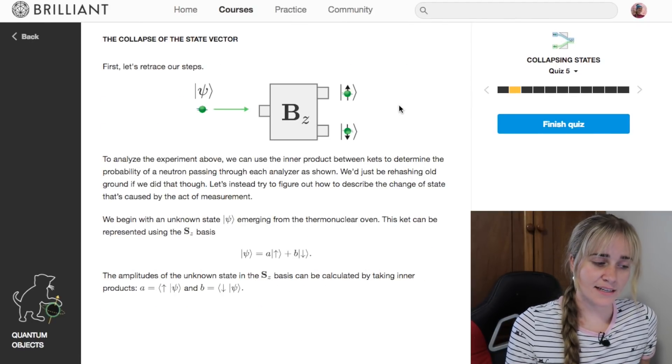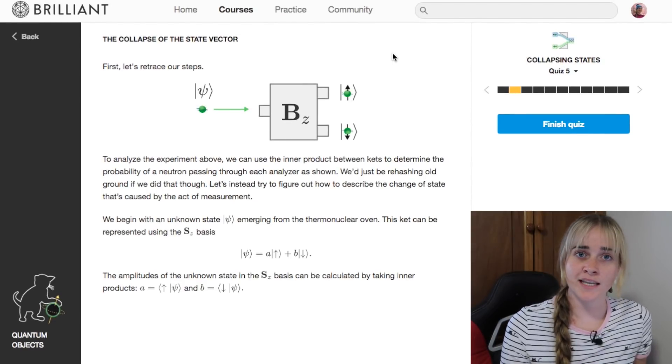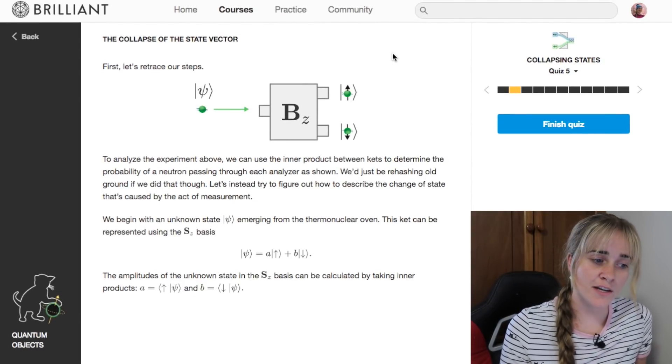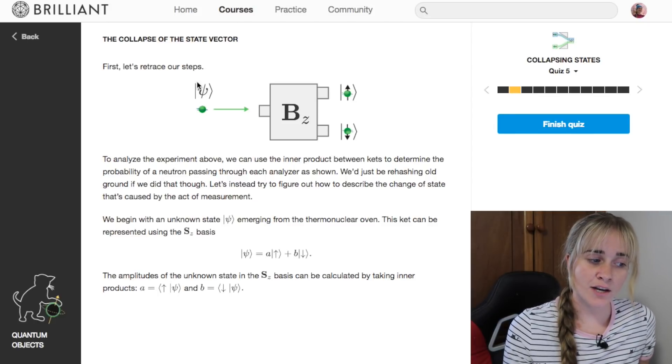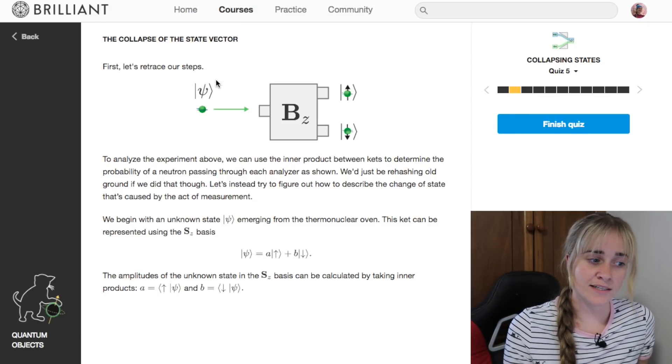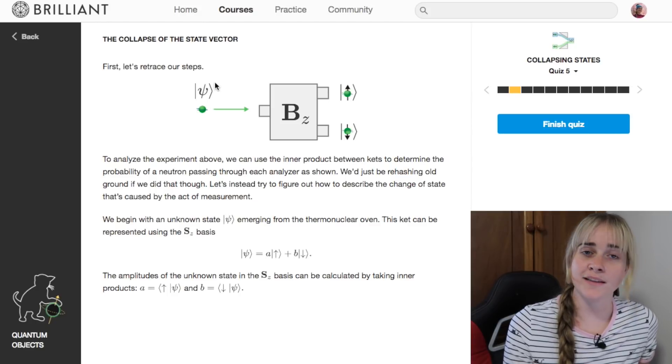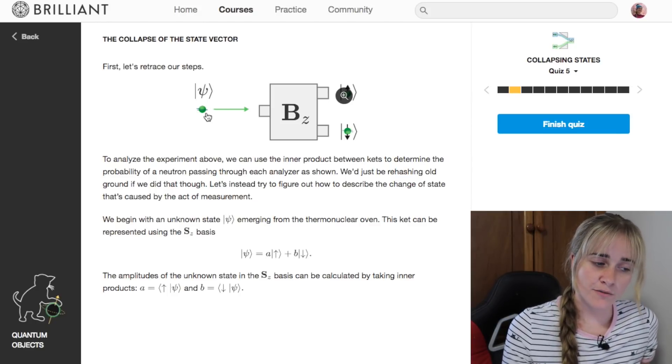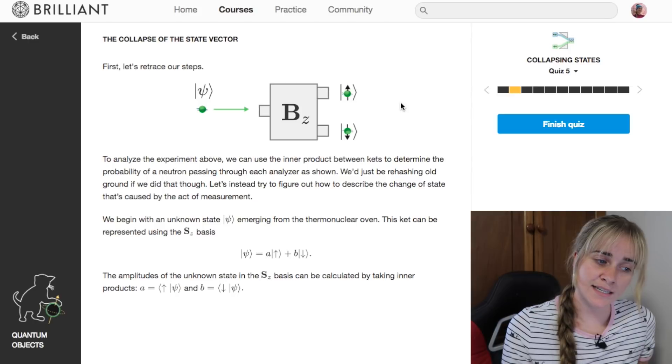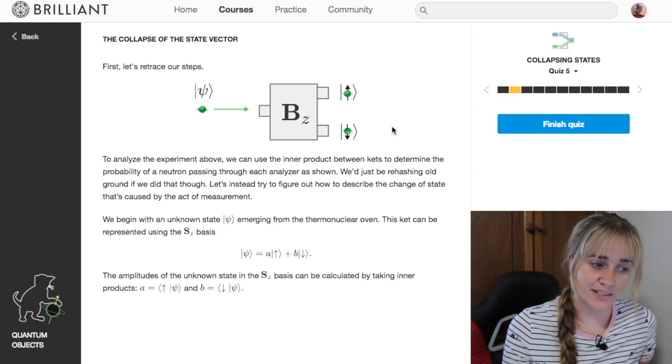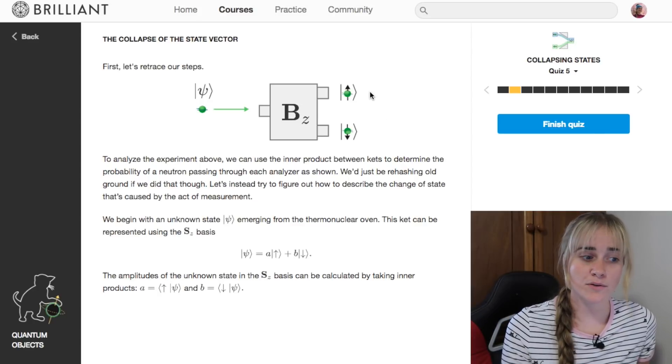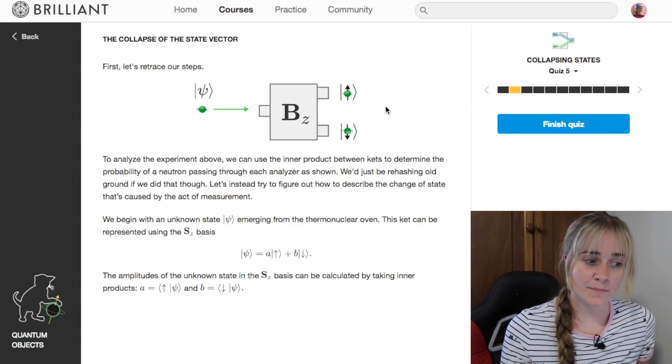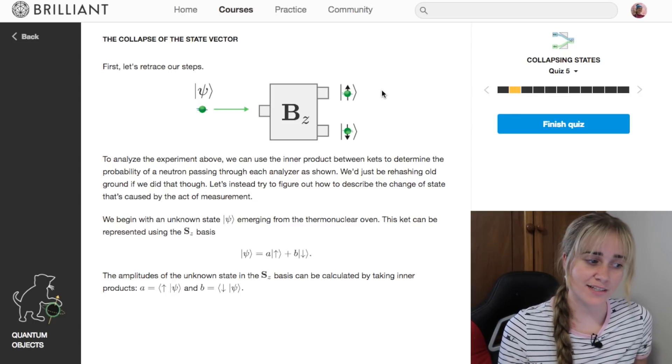This again is the experiment that I've looked at in a few of the previous videos, it's the Stern-Gerlach experiment. You take an unknown ket, so this is a state but we don't know anything about it.